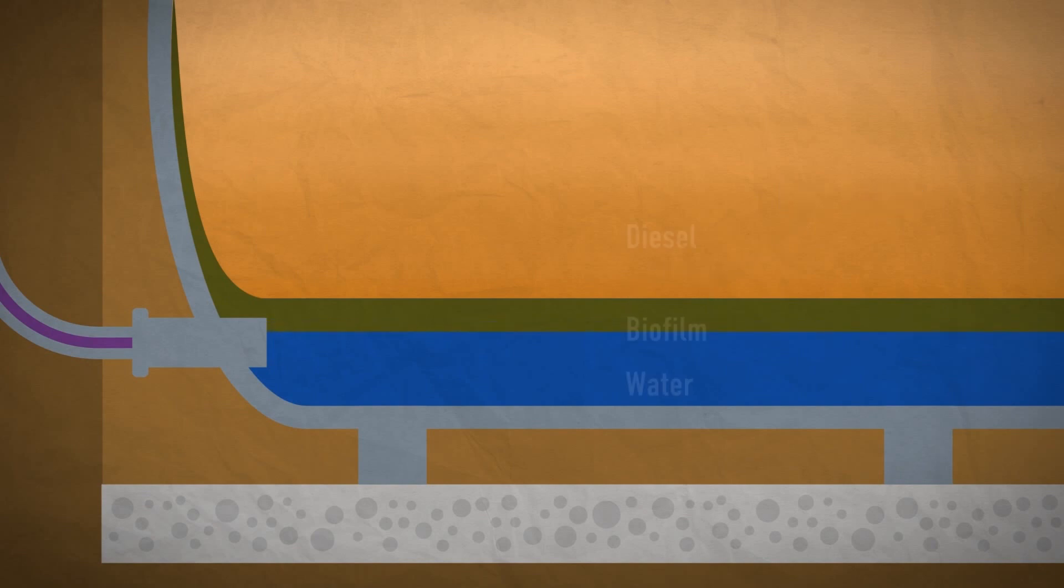As the bug grows, it develops into a planktonic form, eventually appearing as a biofilm. This can get sucked into the engine, causing filters to become blocked and injectors to suffer damage.